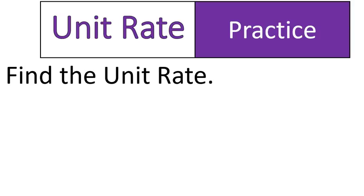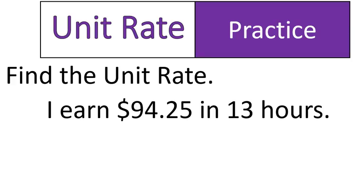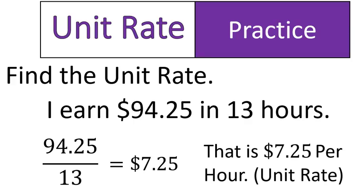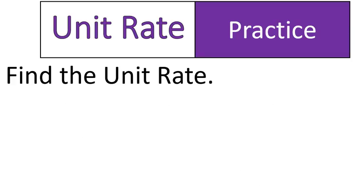Let's look at a question that involves unit rate. The question says: I earned $94.25 in 13 hours. Find the unit rate. Now it's time for you to pause this recording and try to find the unit rate. Okay, if you're back — finding the unit rate is as simple as dividing. You should have taken $94.25, divided by 13, and found out that I make $7.25. That is my hourly rate — I earn $7.25 per hour. That's the unit rate.